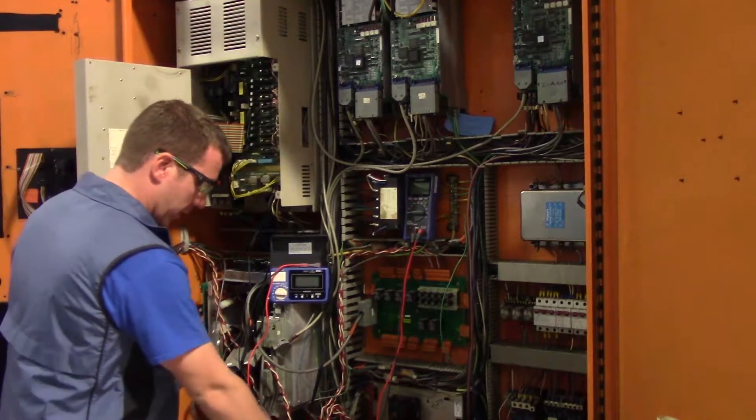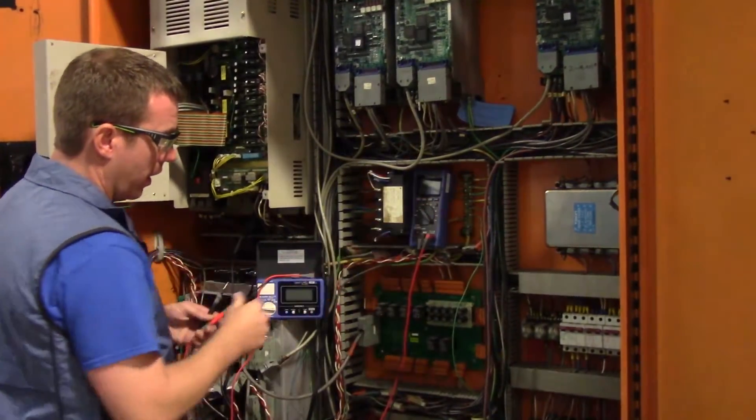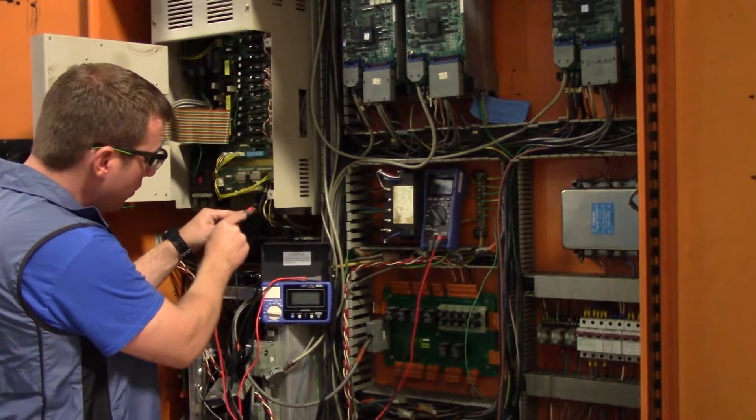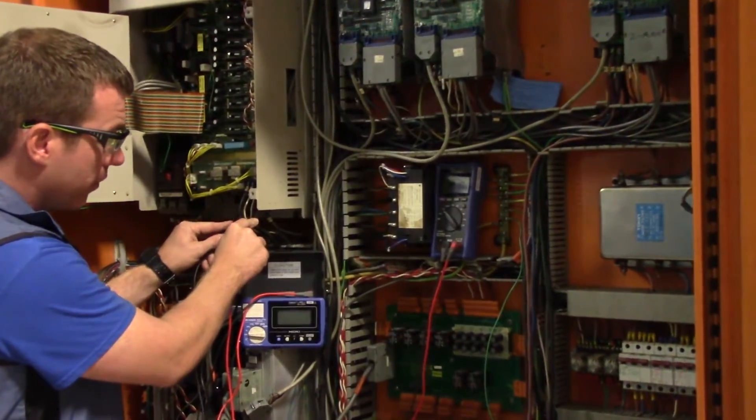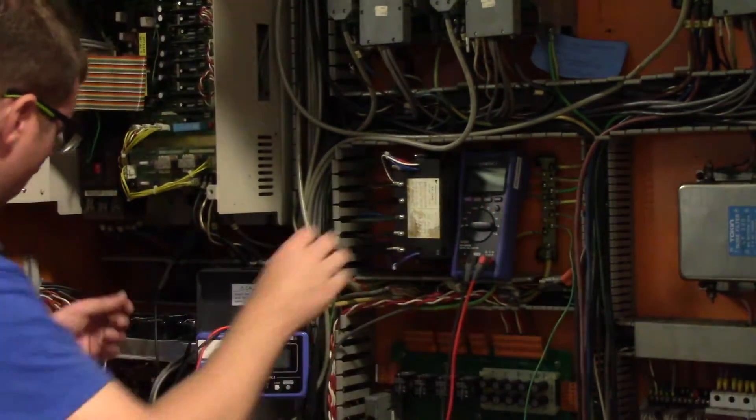Okay, so the first thing that we're going to do is take our multimeter and we're going to check it, set it to the AC function. And we're just going to triple check between U, V, and W on the output of the drive. And we have nothing there. So the drive is safe to work with.